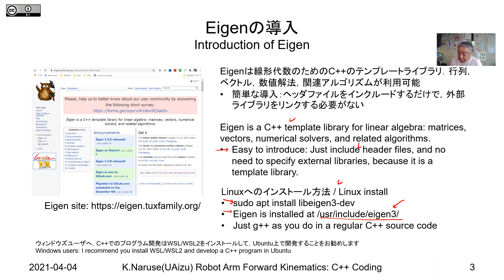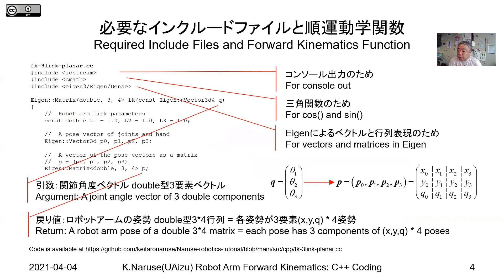For Windows users, I recommend installing WSL — Windows Subsystem for Linux — or WSL2, because it is much easier to develop C++ programs in an Ubuntu environment. This is our source code, and this code is available at the GitHub repository shown here.